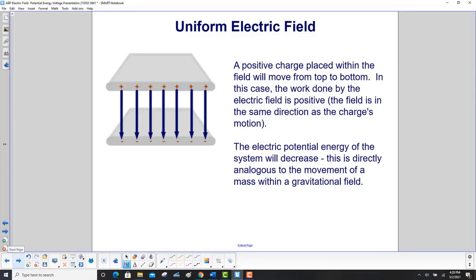A positive charge placed within the field will move from top to bottom. In this case, the work done by the electric field is positive. The field is in the same direction as the charge's motion. The electric potential energy of the system will decrease, and this is directly analogous to the movement of a mass within a gravitational field.